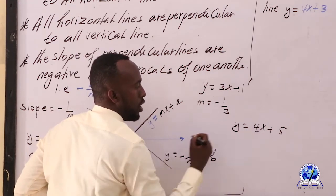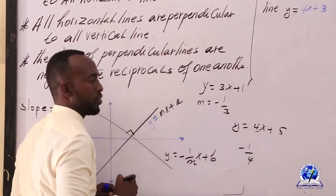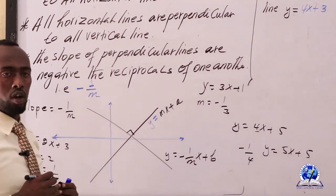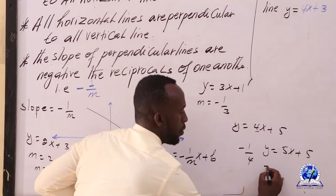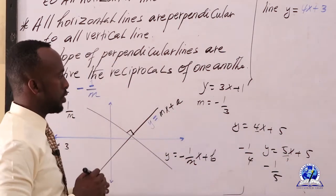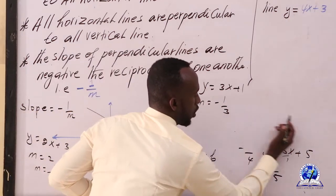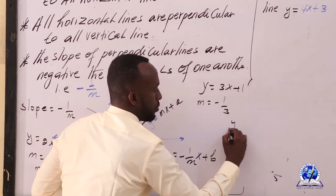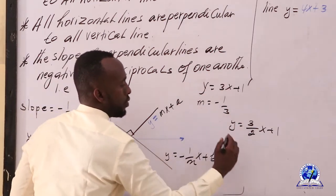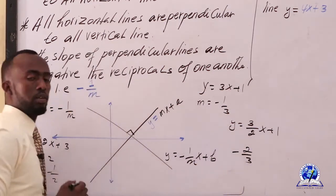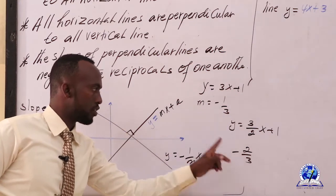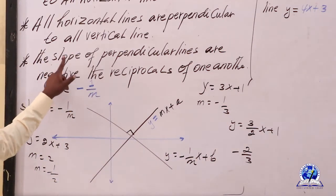This equation is 4 divided by 5. If the equation of 4 is 4, minus 1 divided by 3. This equation is 5 divided by 5. We have to take points: 0 minus 5 is 5 divided by 5. The slope of the perpendicular line is the slope of the perpendicular line.